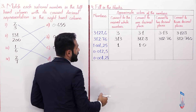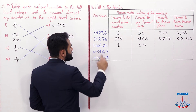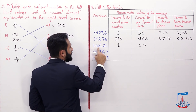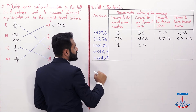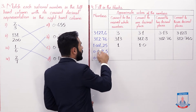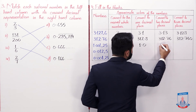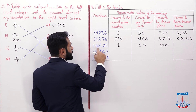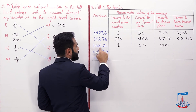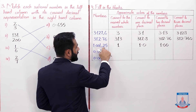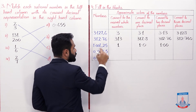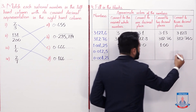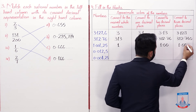For two decimal places of 1.00125: the third digit is less than 5, so it is 1.00. For three decimal places: the fourth digit is 2, which is less than 5, so it is 1.001 as it is.